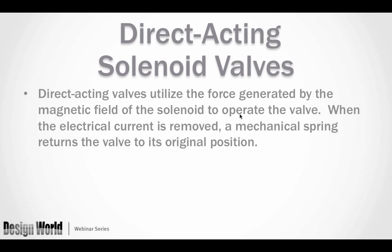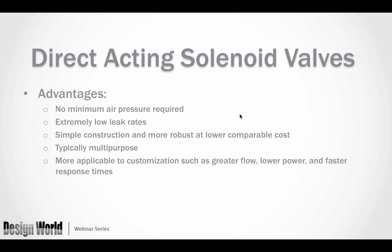Indirect acting valves offer higher flow, low power consumption, greater shift forces, and a lot of variety — they are very popular today. A direct acting valve uses the force of the magnetic field in the solenoid to move the spool, poppet, or other internal element directly. You'll have either a double solenoid pushing from both sides, or a single solenoid with a mechanical spring to return the valve. Direct acting valves have no minimum pressure requirement, and can often run from full vacuum up to rated pressure, including low pressures of 5 or 10 psi.